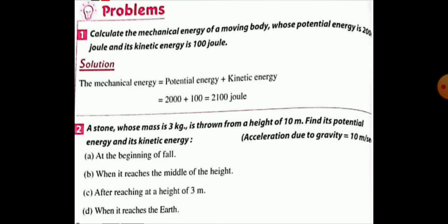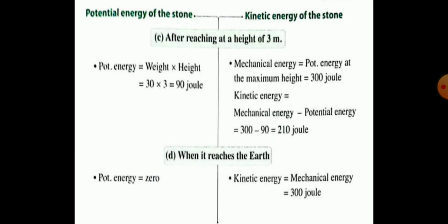Problems. Calculate the mechanical energy of a moving body whose potential energy is 2000 joules and its kinetic energy is 100 joules. Mechanical energy equals potential energy plus kinetic energy equals 2000 plus 100 equals 2100 joules. Number two: a student whose mass is 3 kilograms slides down a road from a height of 10 meters. Find its potential energy and kinetic energy — acceleration of gravity equals 10 meters per second squared — at the beginning of fall, when it reaches the middle height of 3 meters, and when it reaches the ground. Please focus with me in the session to know the answer.